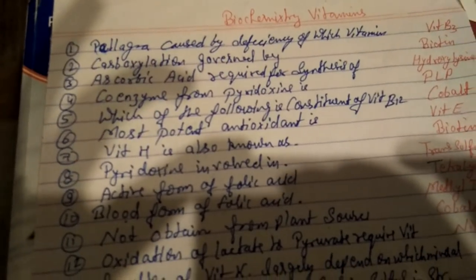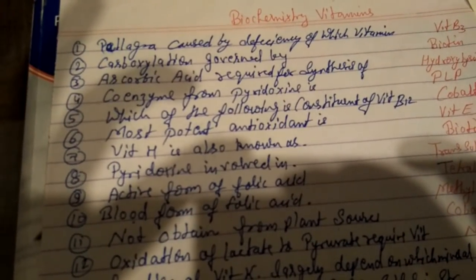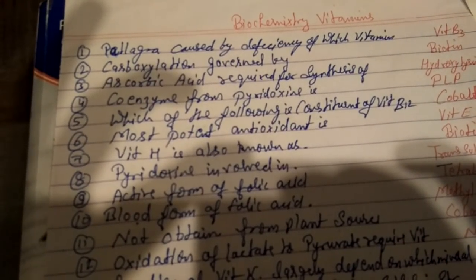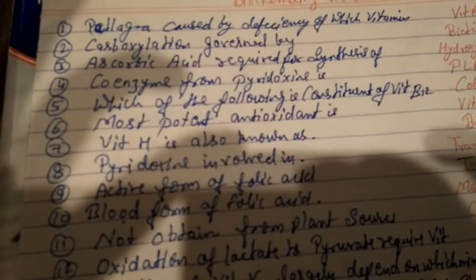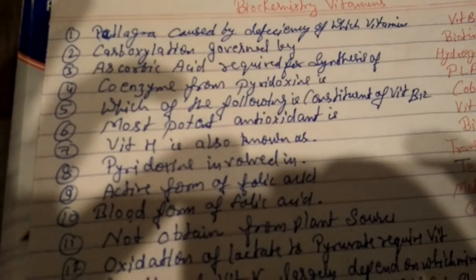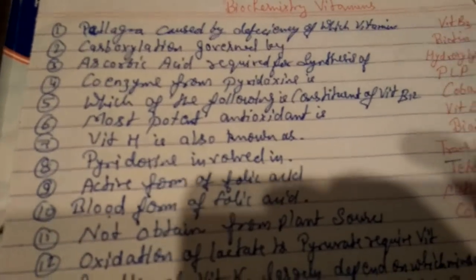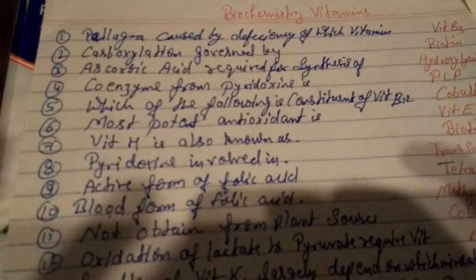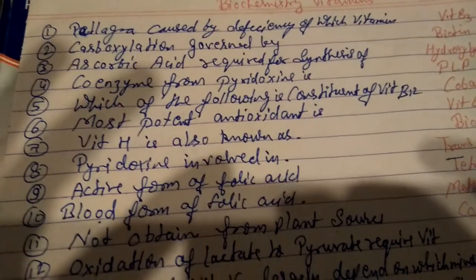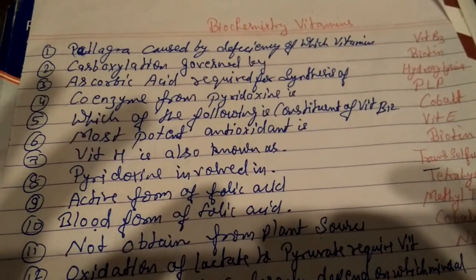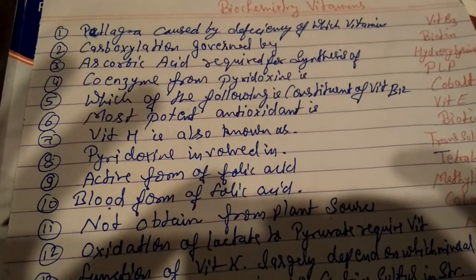Question number six: most potent antioxidant is Vitamin E. If you think about antioxidants — A, C, E — the most potent antioxidant is Vitamin E. Vitamin H is also known as biotin.